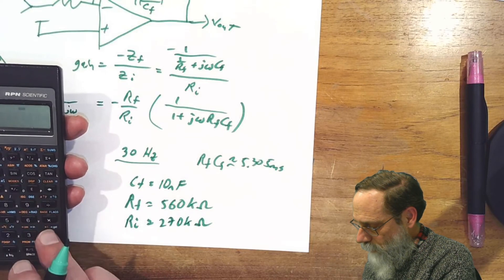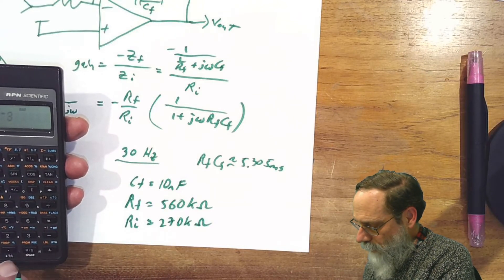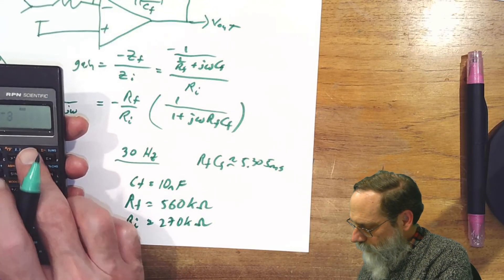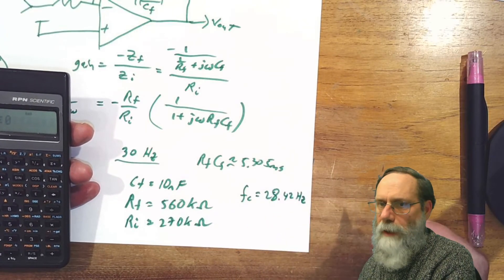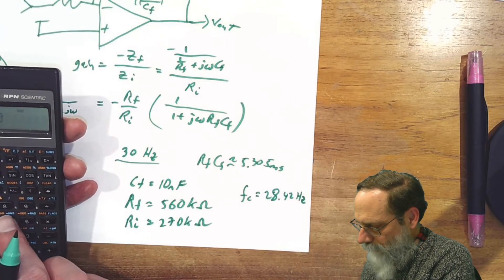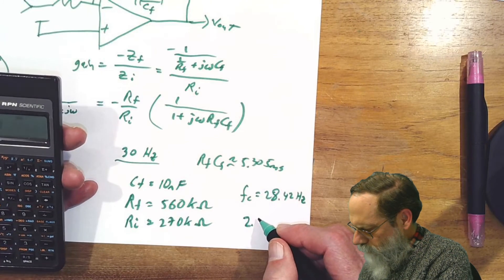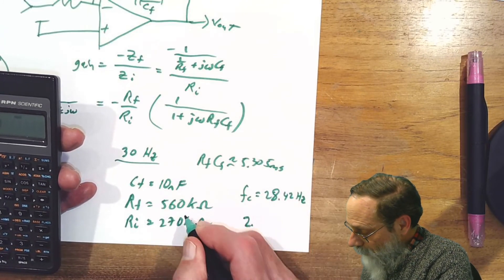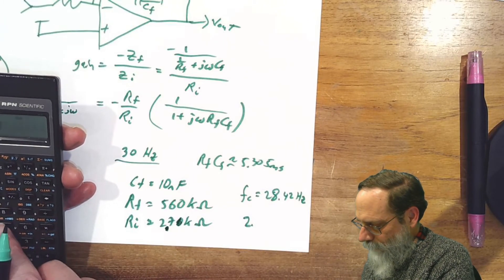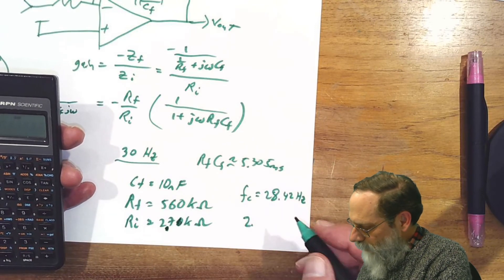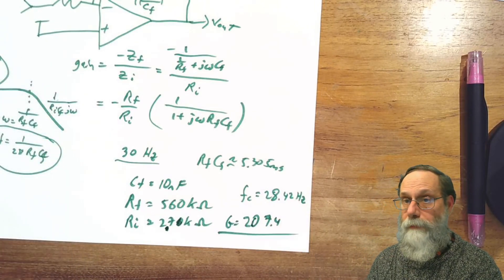Now we can work out what this is actually going to give us. 560 kiloohms times 10 nanofarads is 5.6 milliseconds, multiply that by 2 pi and invert it. So we're going to get a corner frequency of 28.42 hertz, not too bad for trying to get 30. The gain is going to be 560 kiloohms divided by 270 kiloohms. I didn't want 270, I wanted 200. So let's change that to 2.7 kiloohms. 560 divided by 2.7 kiloohms is going to be a gain of 207.4 in the passband at very low frequencies.